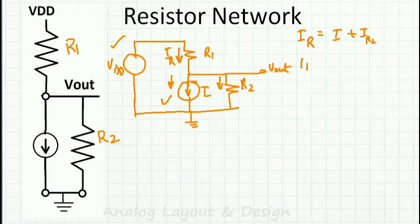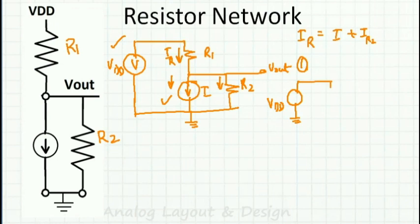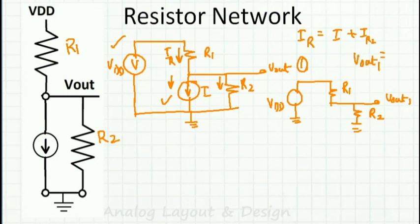First, I draw the circuit with only Vdd (the voltage source), open-circuiting the current source. I keep Vdd, R1, R2, and call the output Vout1. Using the resistor divider equation, Vout1 equals Vdd into R2 divided by (R1 plus R2).